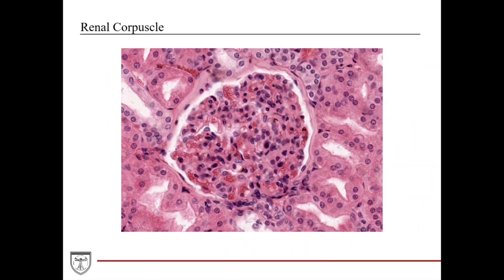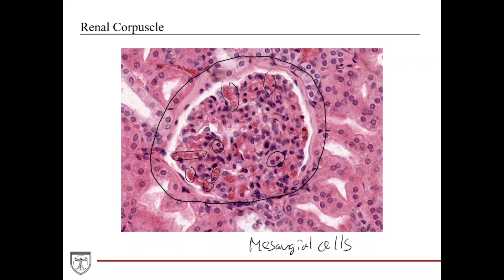Histologically, on an H&E stained tissue section from kidney, the best way to identify kidney tissue on a lab practical is to look for a renal corpuscle. You'll see a lot of red blood cells within glomerular capillaries. Some of the supporting cells you see around the capillaries — for example these cells here — are called mesangial cells. These are essentially connective tissue support cells for the glomerular capillaries and Bowman's capsule.